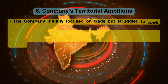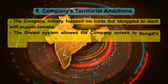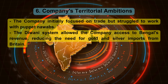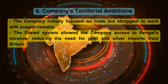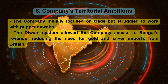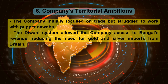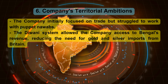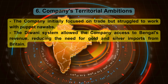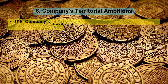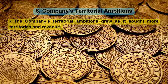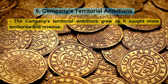Company's Territorial Ambitions. The company initially focused on trade but struggled to work with puppet Nawabs. The Diwani system allowed the company access to Bengal's revenue, reducing the need for gold and silver imports from Britain. The company's territorial ambitions grew as it sought more territories and revenue.